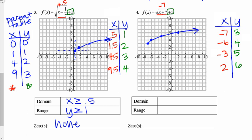Domain: I'm starting at x = −7 and getting bigger, so I include every x value ≥ −7. Range: I'm starting at y = 3, so I include every y value ≥ 3. And last but not least, is my graph crossing the x-axis anywhere? No — it's not crossing it and it will never come back down to cross it. So I have no zeros.